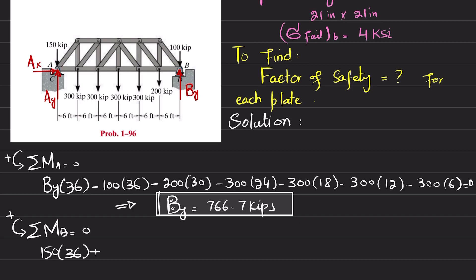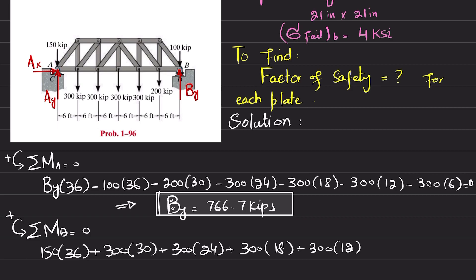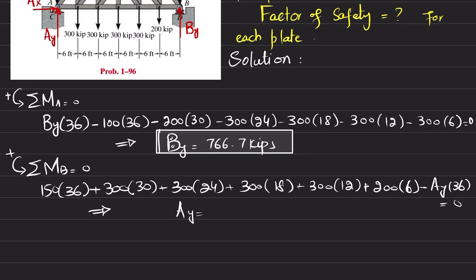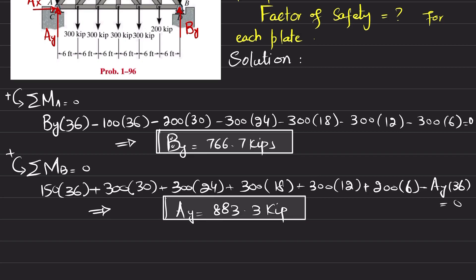Continuing the moment equation about B: 150 × 36 plus the remaining distributed loads at their respective perpendicular distances of 30, 24, 18, 12, and 6, minus Ay × 36 = 0. Solving this gives Ay = 883.3 kips. These two vertical reaction forces act on the concrete abutments.